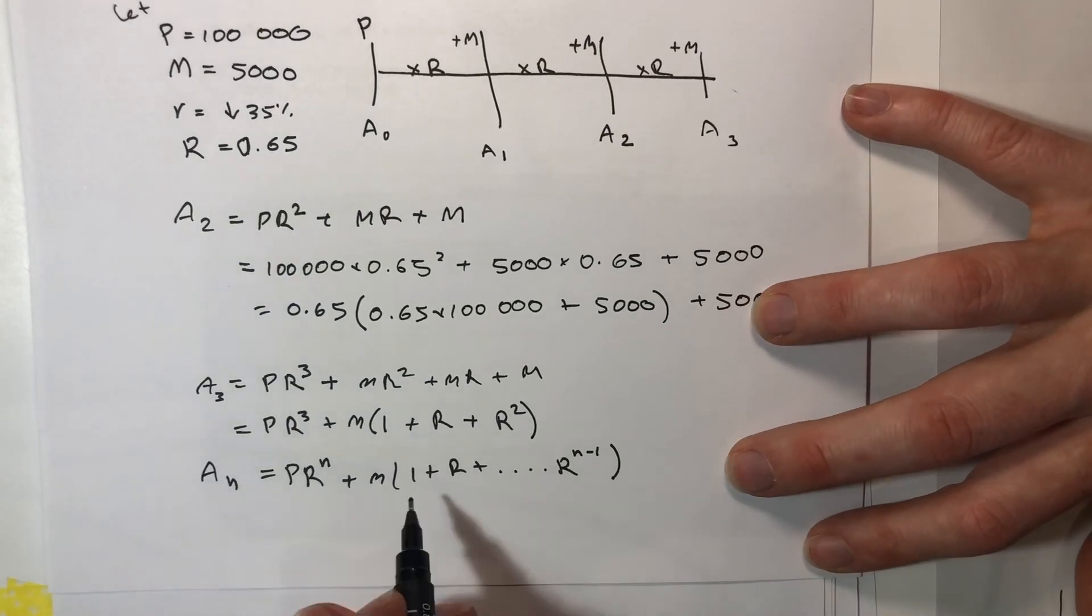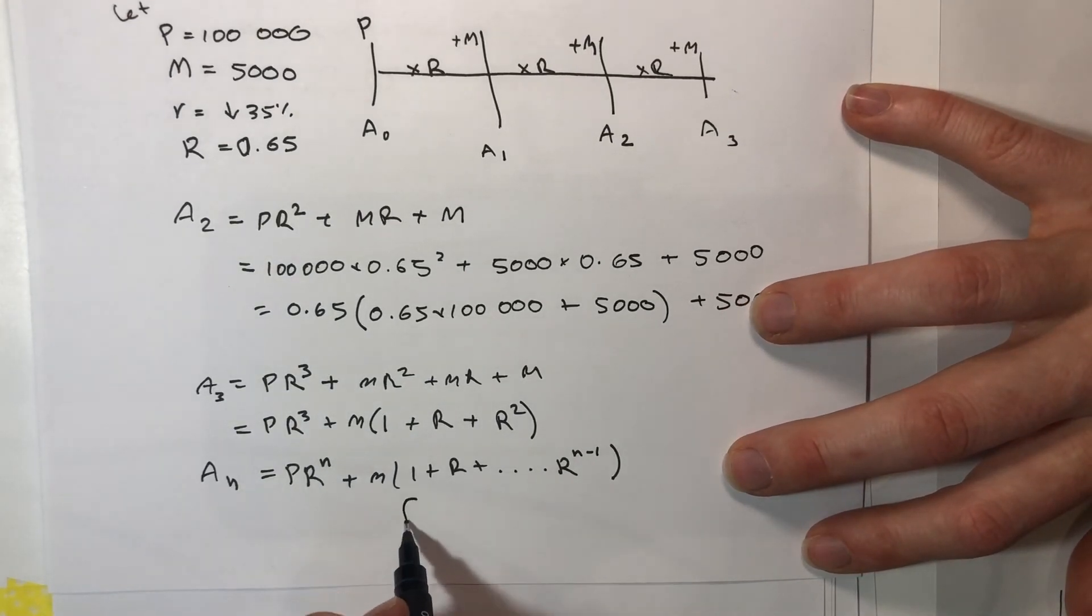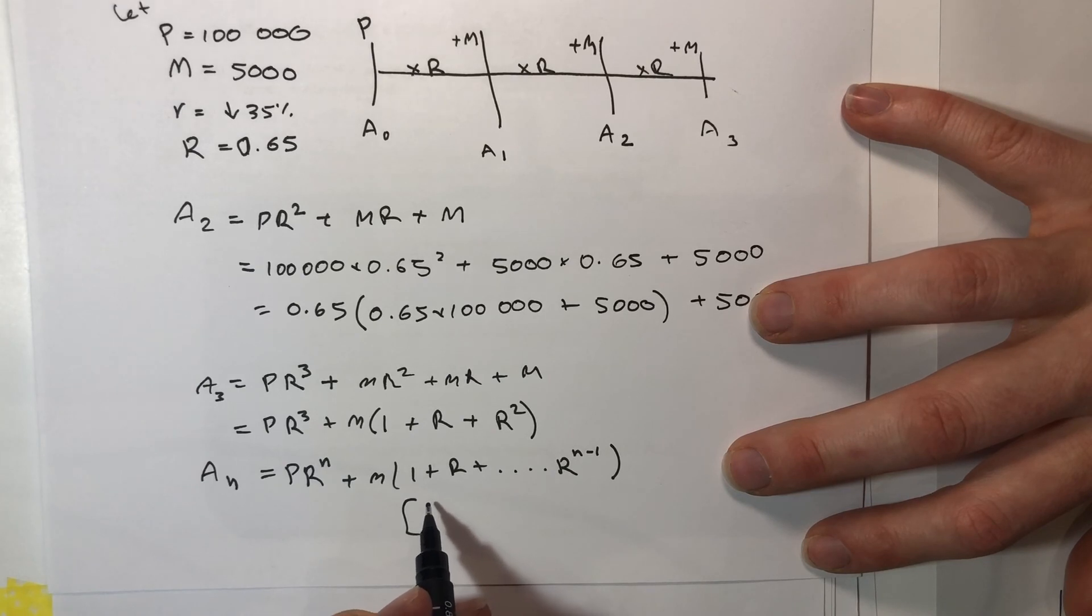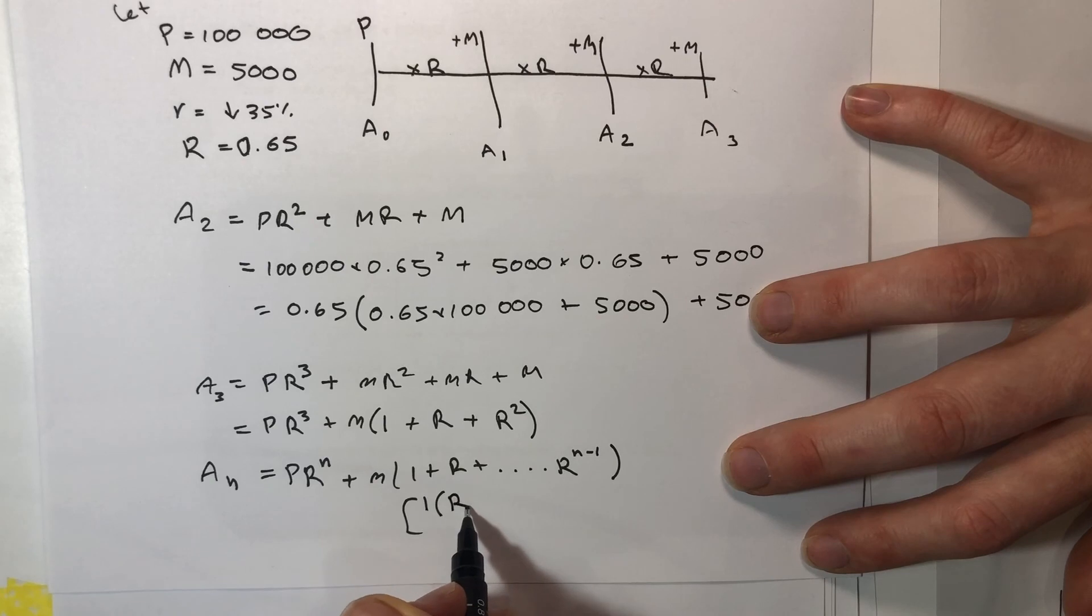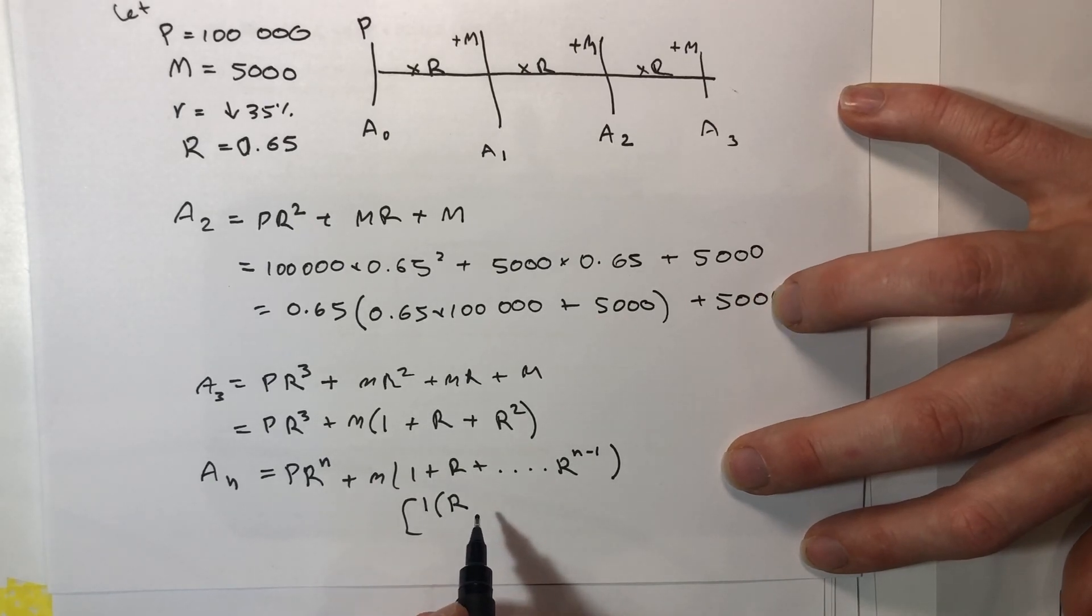I recognise that this is a geometric series which would have a series sum of A being my first term times R to the N, R is my common ratio which is still capital R, and M is the number of terms which is still N minus 1.